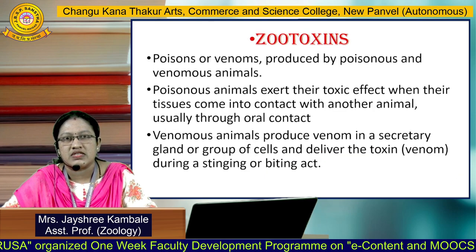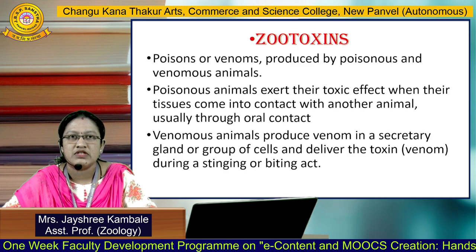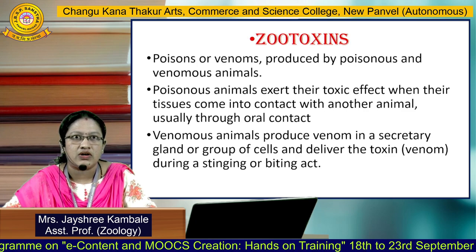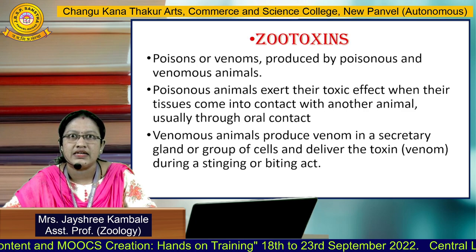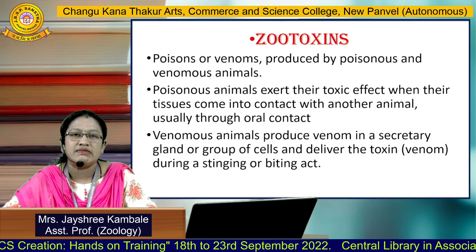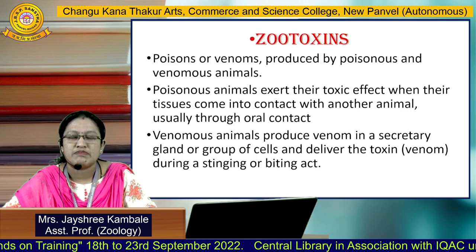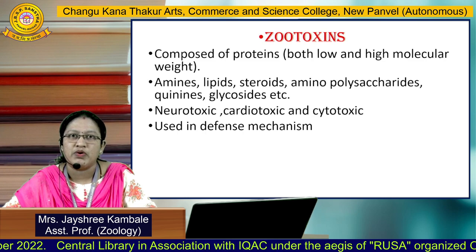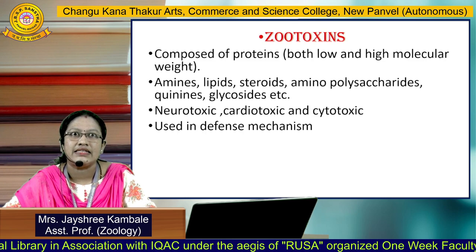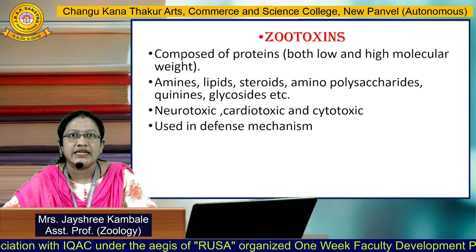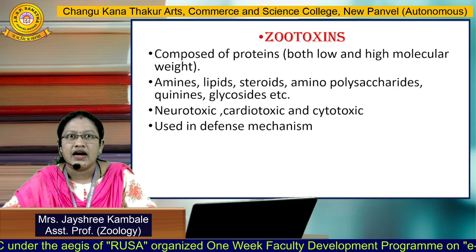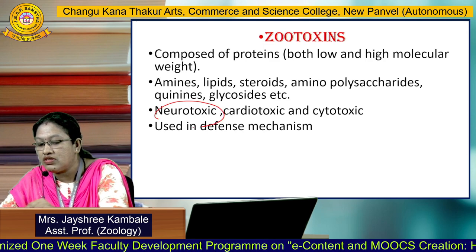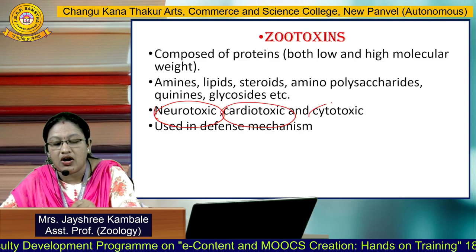Zootoxin is nothing but a poison or venom produced by poisonous and venomous animals. Poisonous animals exert their toxic effect when their tissue comes into contact with another animal, usually through oral contact. While venomous animals produce venom in a secretory gland or a specialized group of cells and deliver the toxin during a stinging or biting act. These toxins are composed of proteins — either low molecular or high molecular — along with amines, lipids, steroids, aminopolysaccharides, quinines and glycosides.